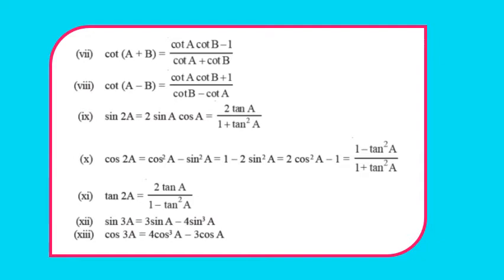Then sin2A = 2 sinA cosA = 2tanA/(1 + tan²A). We have two identities for sin2A. Then cos2A = cos²A − sin²A = 1 − 2sin²A = 2cos²A − 1 = (1 − tan²A)/(1 + tan²A), giving four identities for cos2A. tan2A = 2tanA/(1 − tan²A). Then sin3A = 3sinA − 4sin³A and cos3A = 4cos³A − 3cosA. Pause and note down these identities.